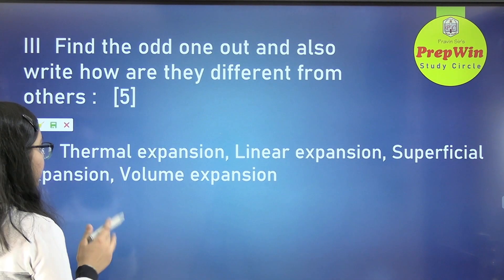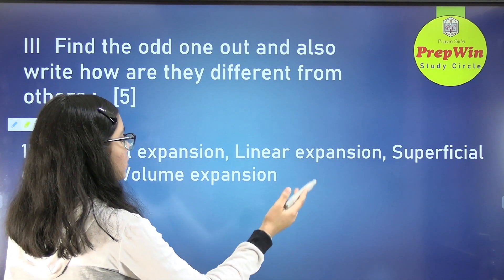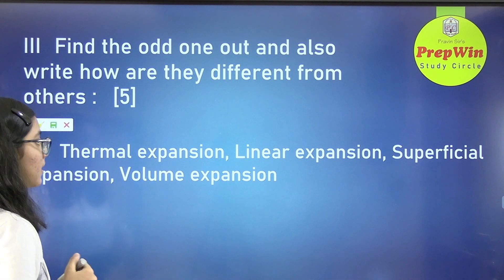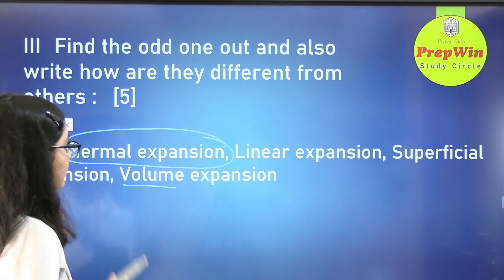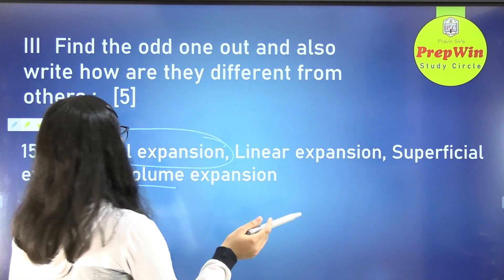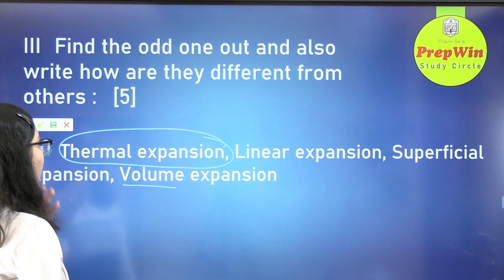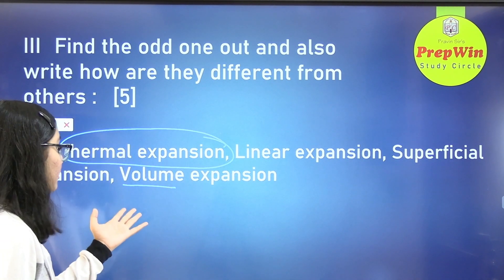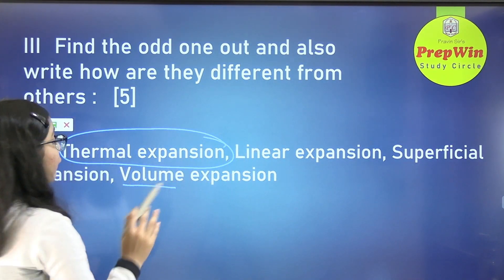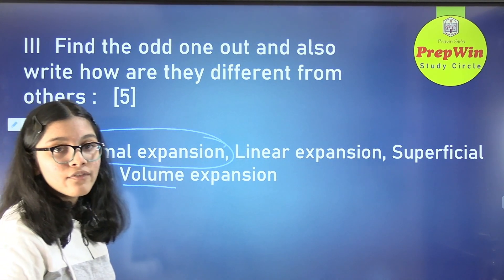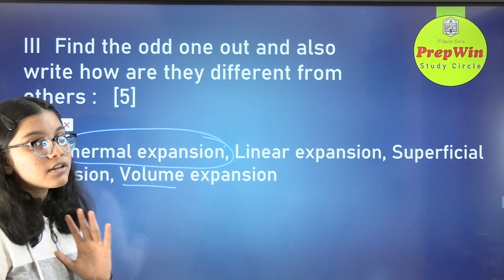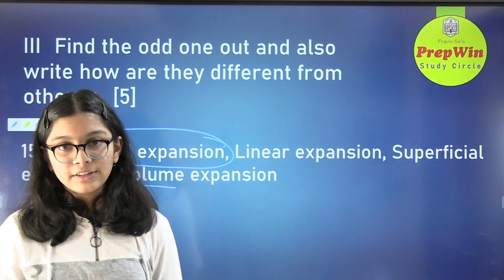The last question of choose the odd one out: thermal expansion, linear expansion, superficial expansion, and volume expansion. Thermal expansion is the odd one out. Linear expansion, superficial expansion, and volume expansion (cubical expansion) all have a coefficient of expansion, whereas thermal expansion does not.